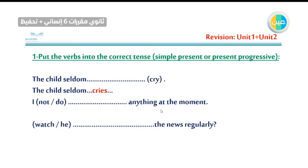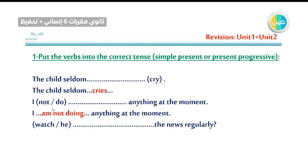Number seven: 'I not do anything at the moment.' He wants you to make the sentence negative. 'At the moment' means now — present progressive. We add -ING to the verb 'do' → doing. The helping verb for 'I' is 'am.' So: I am not doing anything at the moment.